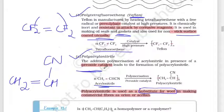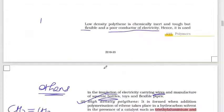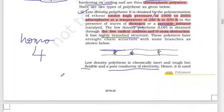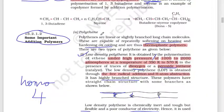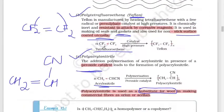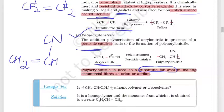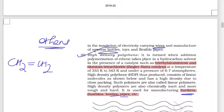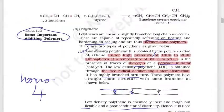To summarize the catalysts: low density polythene uses dioxygen peroxide, high density polythene uses Ziegler–Natta catalyst, Teflon uses persulfate, and polyacrylonitrile uses peroxyl catalyst. All three — polythene, Teflon, and polyacrylonitrile — are homopolymers formed from a single monomeric species.